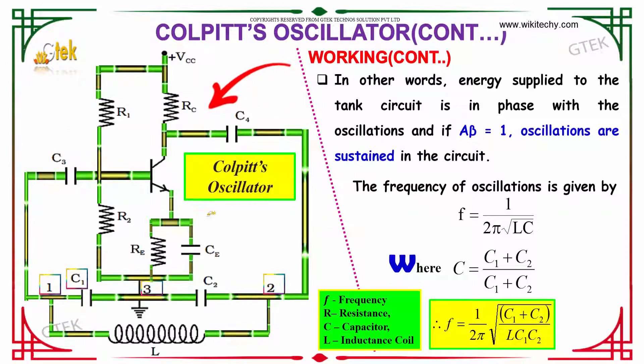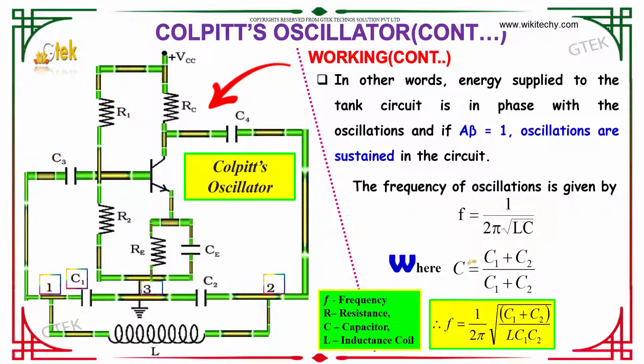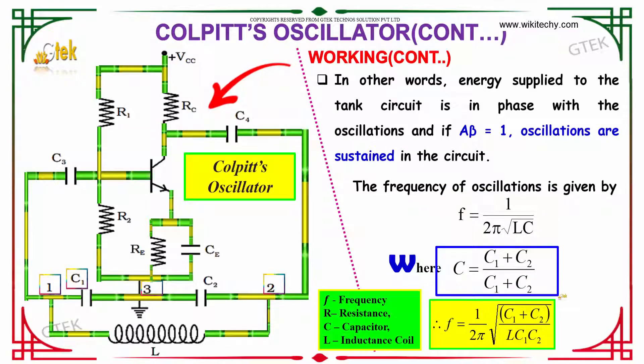The frequency of oscillations is given by f = 1 / (2π√LC), where the equivalent capacitance C = (C1 × C2) / (C1 + C2).